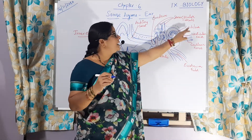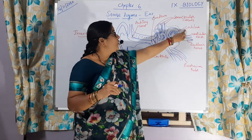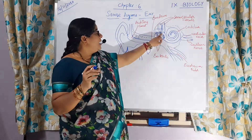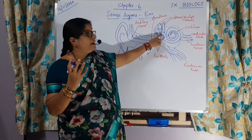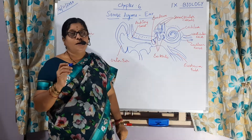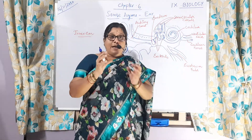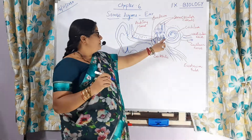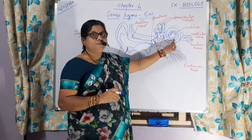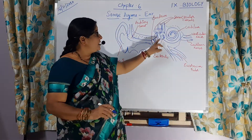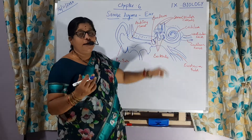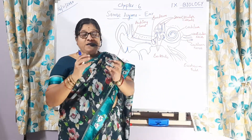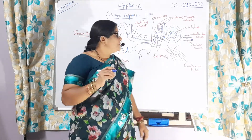The important parts of the inner ear are semicircular canals, vestibule and cochlea. The anterior part of the vestibule is the sacculus, which is fluid-filled, and the posterior part is the utriculus. A large number of hair cells are present there and they help in passing the message of hearing to the brain.